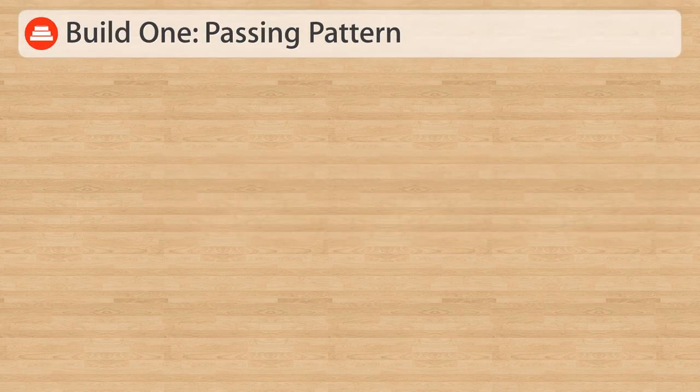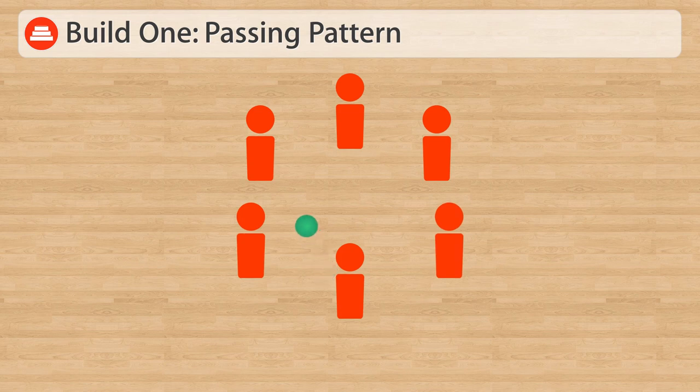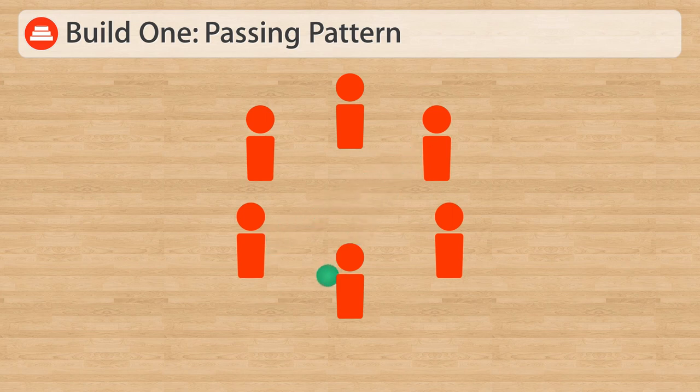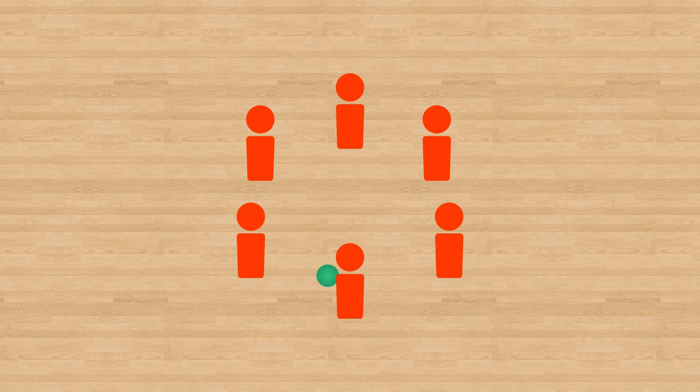In Build 1, students will get into a circular formation and work on developing a passing pattern. Students must pass the ball around, making sure not to pass to the direct neighbors, and making sure that every student gets a touch on the ball before it comes back to the start.